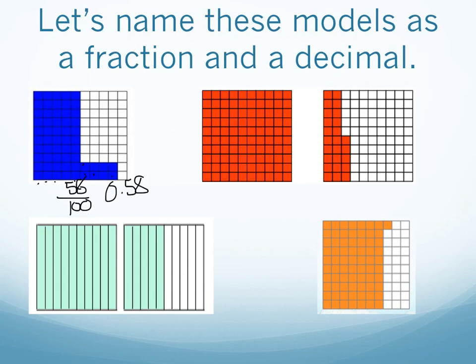In this second model, I see one whole, and then twenty-five hundredths — for one and twenty-five hundredths as a mixed number, or one point two five as a decimal.